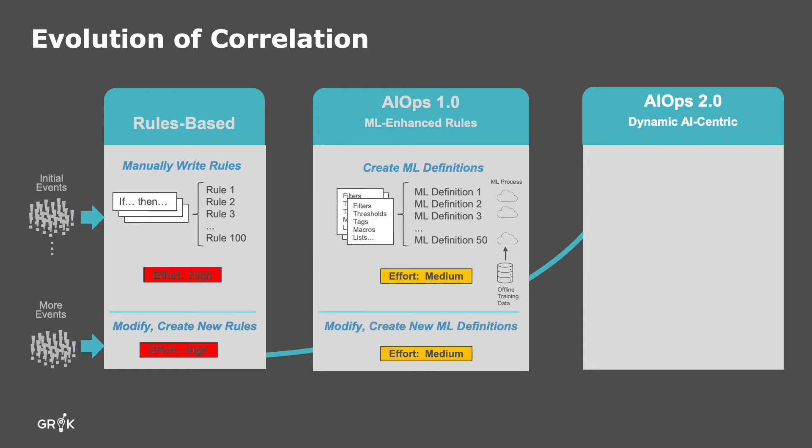The first-generation AIOps vendors attempted to address these problems by adding machine learning. These AIOps 1.0 solutions learned from historical offline data and events and then used the patterns found to create similar event groupings as they occurred. This action allowed the teams to pick out more patterns of events, which was helpful.